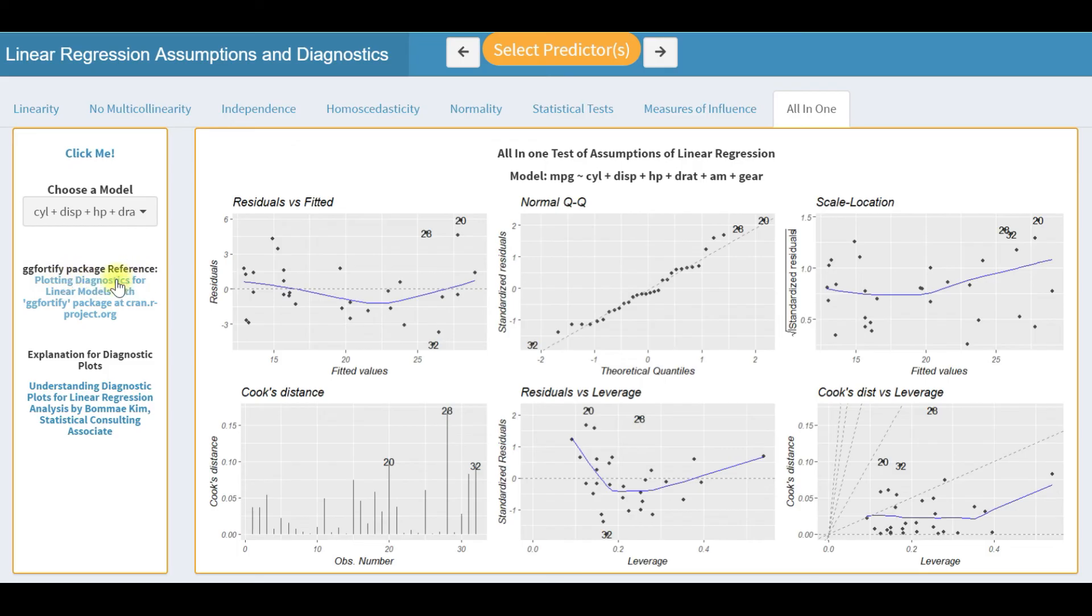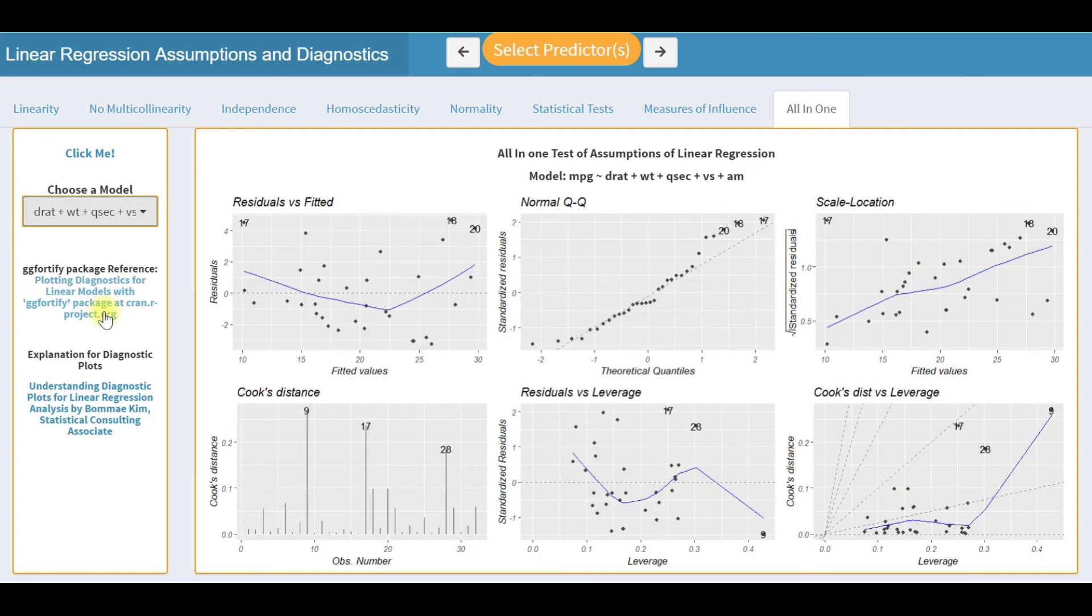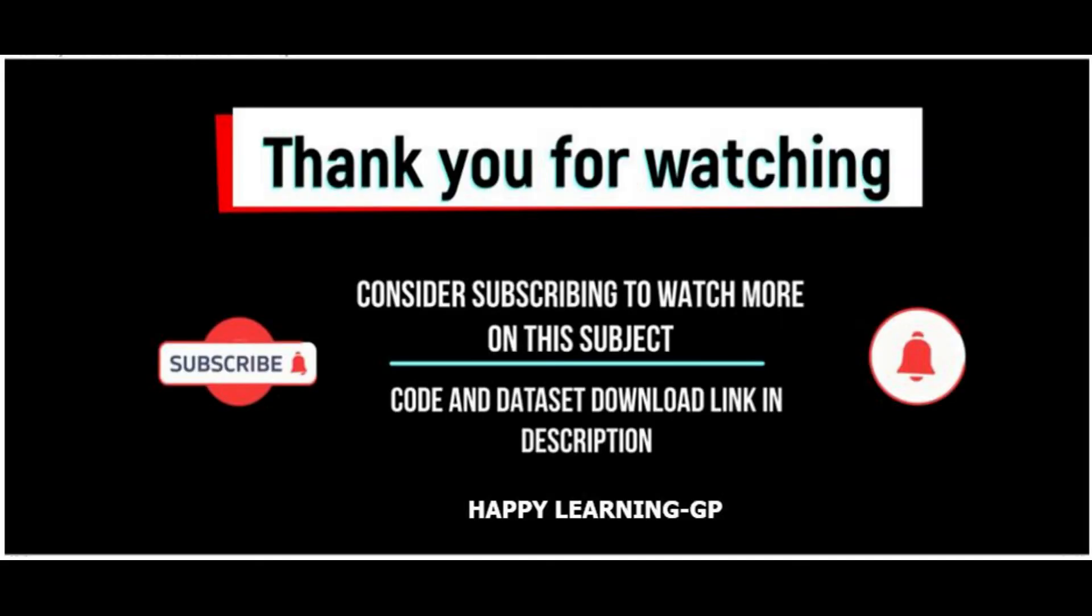Next is the all-in-one tab having six plots together for the selected model. You have the option to select one by one to review. Here I use the ggfortify package and suitable links are provided for better understanding of the subject. The sidebar panel is fully hidden to take advantage of the screen. As there are only three tabs in this app, right and left arrow buttons provided on the top of the screen control those tab movements.